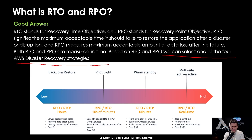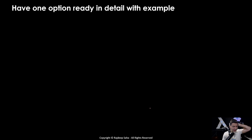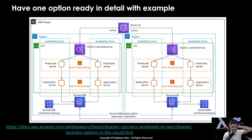To reduce RPO, you just need to take more frequent backups. For multi-site active-active, RPO is essentially real-time because you are literally replicating data from one region to another. Keep in mind: disaster recovery operates between regions, while high availability operates between different availability zones within the same region. You should also have one disaster recovery option ready in detail with an example, as this often comes up as a follow-up. One popular DR strategy in critical enterprise use cases is multi-site active-active.